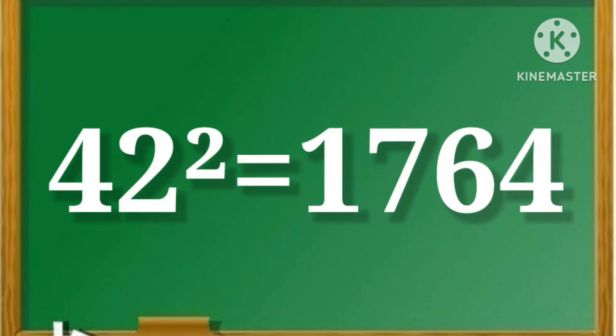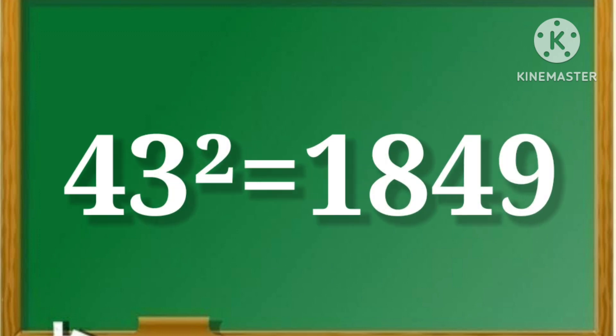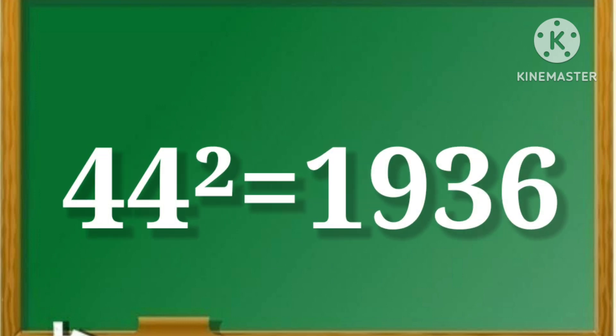42 square is equal to 1764. 43 square is equal to 1849. 44 square is equal to 1936.